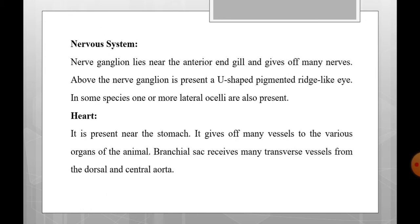In the nervous system, there is a nerve ganglion that lies near the anterior end of the gills and gives off many nerves. Above the nerve ganglion is present a U-shaped pigmented ridge-like eye. In some species, one or more lateral ocelli are also present. The heart is present near the stomach and gives off many vessels to the various organs. The branchial sac receives many transverse vessels from the dorsal and ventral aorta.